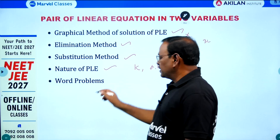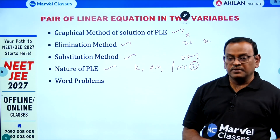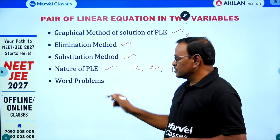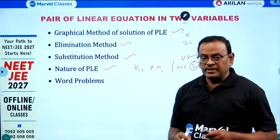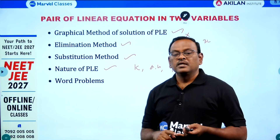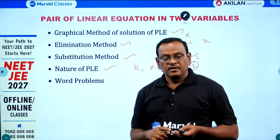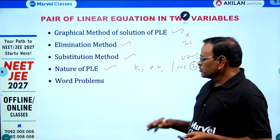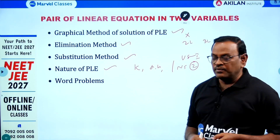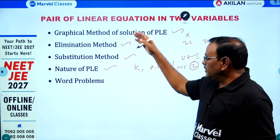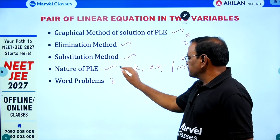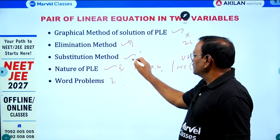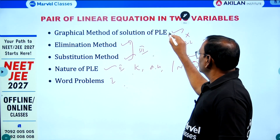Word problems: more than 30 types of word problems are there, but focus more on basic types — problems based on numbers, age, distance, speed, and time. Among these five exercises, word problems are the first preference, followed by second, third, and fourth in order.